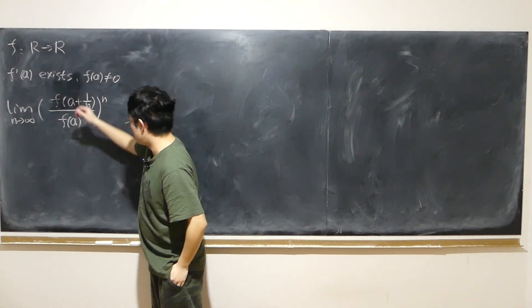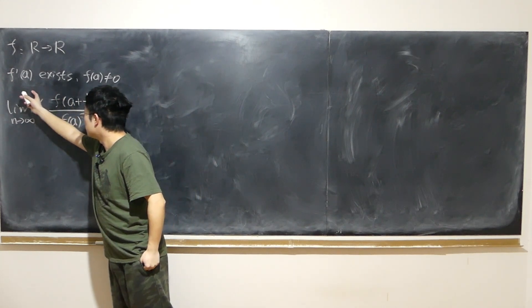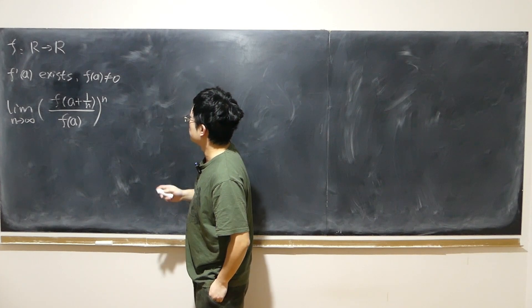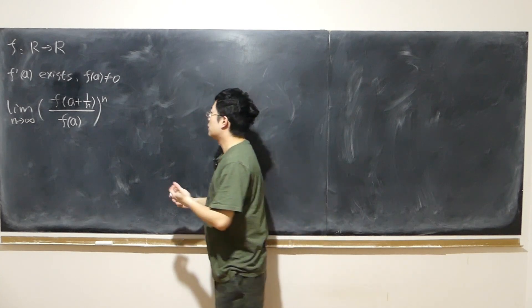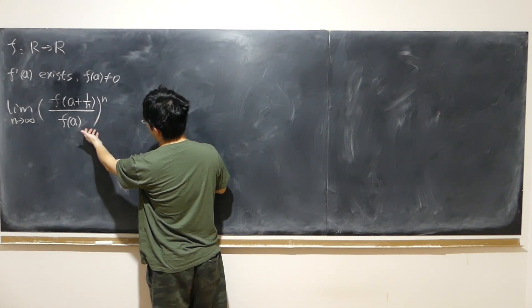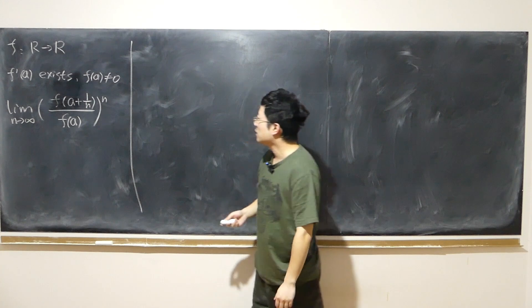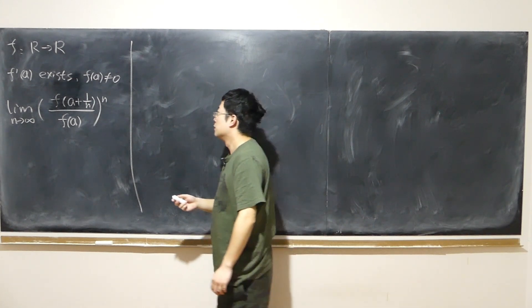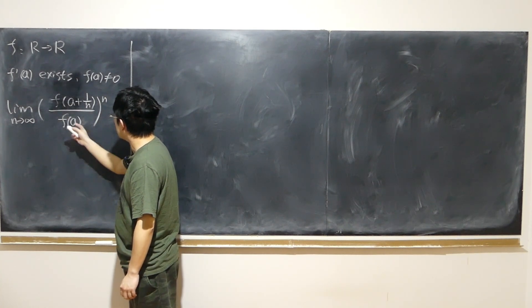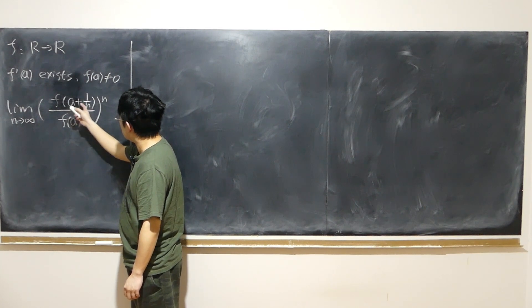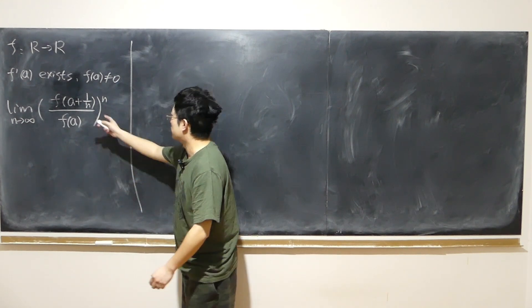Function f is a function mapped from real numbers onto real numbers. If the derivative exists at point a, and of course we require f(a) not equal to 0 because it's at the bottom, so we want to find the limit of (f(a+1/n)/f(a))^n as n approaches infinity. To do that, we will take advantage of the fact that the derivative exists and see if we can somehow turn it into the form of derivative, especially when we have the incremental increase in 1/n as n approaches infinity. That approaches 0.